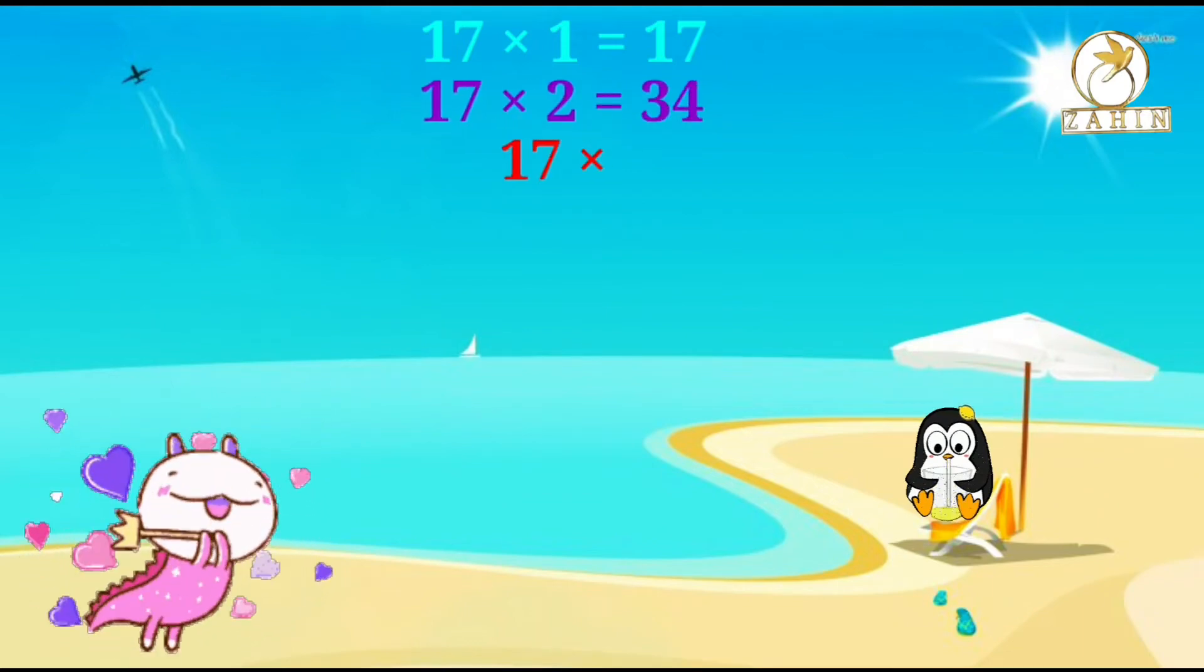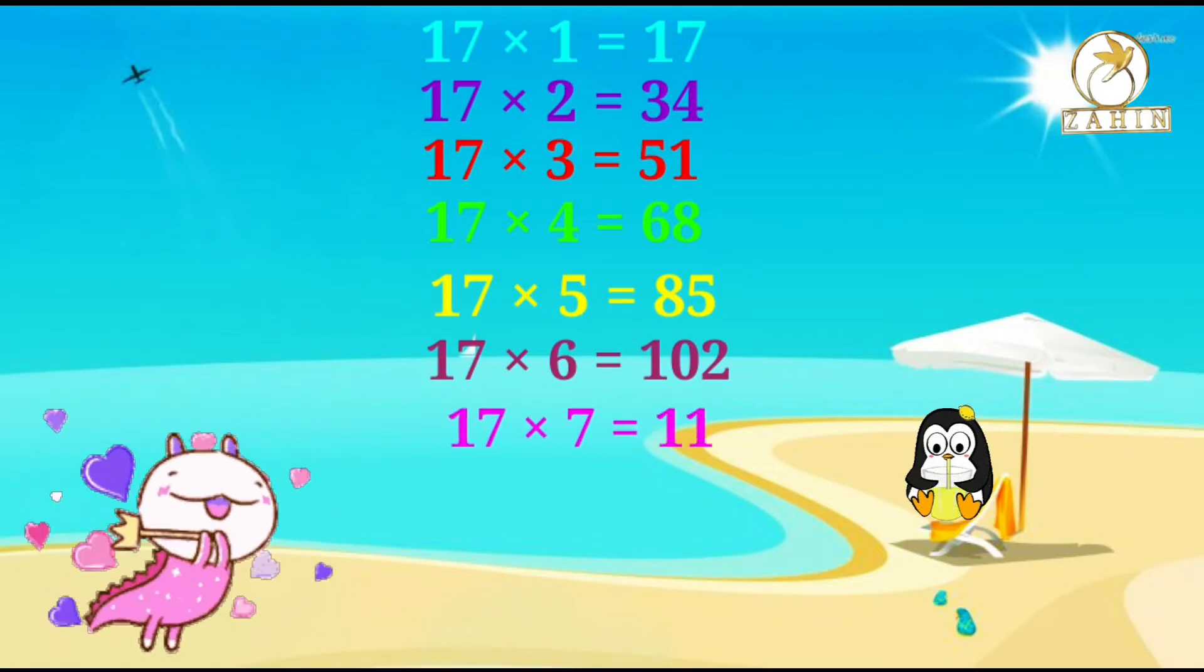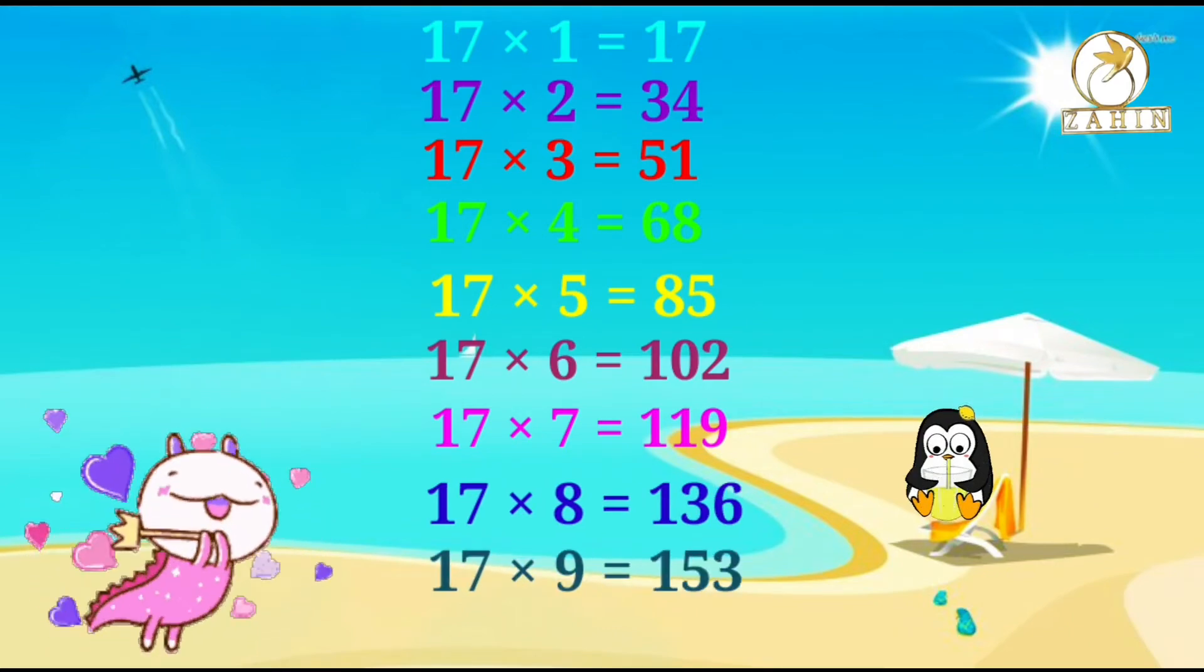17 times 2 equals 34, 17 times 3 equals 51, 17 times 4 equals 68, 17 times 5 equals 85, 17 times 6 equals 102, 17 times 7 equals 119, 17 times 8 equals 136, 17 times 9 equals 153, 17 times 10 equals 170.